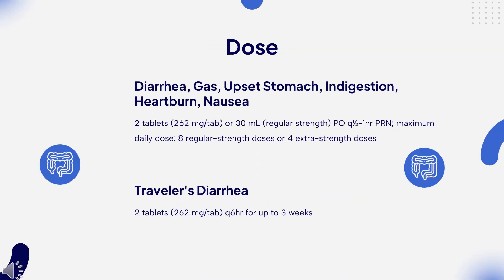Dose — Diarrhea, gas, upset stomach, indigestion, heartburn, nausea: 2 tablets (262 mg per tab) or 30 mL regular strength, every 1 hour as needed. Maximum daily dose: 8 regular-strength doses or 4 extra-strength doses.